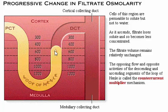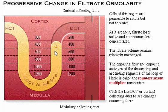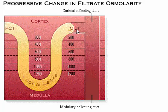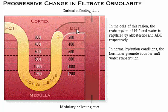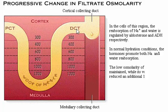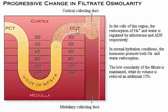The osmolarity of the filtrate entering the late DCT and cortical collecting duct can be as low as 100 milliosmoles. In the cells of this region, the reabsorption of sodium ions and water is regulated by the hormones aldosterone and antidiuretic hormone. In normal hydration conditions, low levels of both hormones promote the reabsorption of sodium ions and water from the filtrate, maintaining the low osmolarity of the filtrate while reducing its volume by an additional 15%.